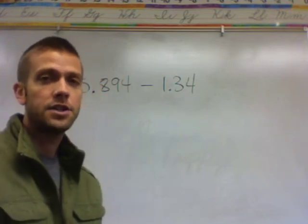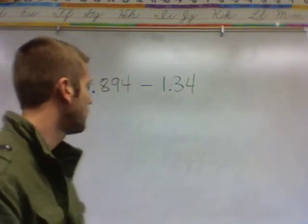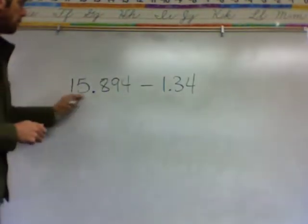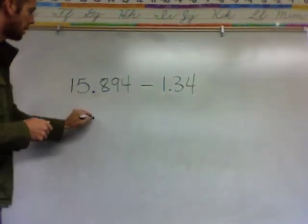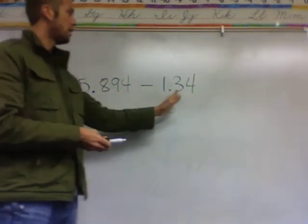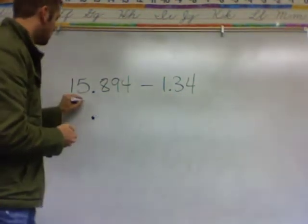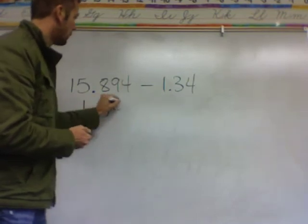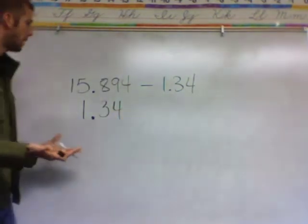To subtract, just line a decimal up under the first number. So we have two numbers, we should have one on the top and then another number on the bottom. There's where the decimal would line up, 1 and 34, 1 and 34. As long as you line up your numbers, you should be fine.